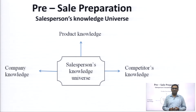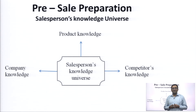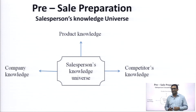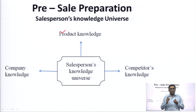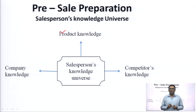The first and very important stage is pre-sales preparation. Pre-sales preparation is the knowledge which a salesperson requires to make that sale, and this is also known as the salesperson's knowledge universe. This basically has three major things. The first is product knowledge — the knowledge about features, benefits, style, and origin of your product or service which you are going to offer to customers. What are the benefits? What are the different styles? What are the different prices and features of your product?